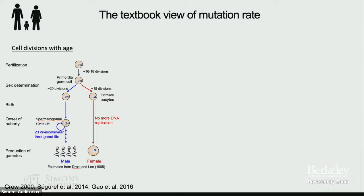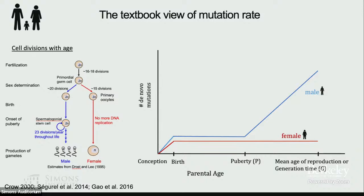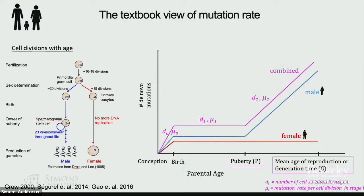The textbook view of mutation rates is that mutations occur during development and ontogenesis, where in oocytes all the mutations occur by the birth of the future mother, and in spermatogonial cells these divide during development and then post-puberty in males. We can conceptualize this as a large number of divisions in females between conception and birth, then a period of stasis. In males, germ cell divisions occur during conception and birth, then stasis until puberty, after which spermatogonial cells continue dividing. Each cell division is an opportunity for errors that can be passed on as germline mutations.